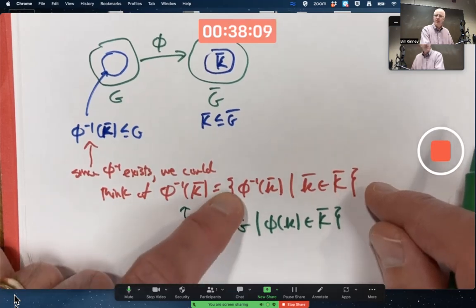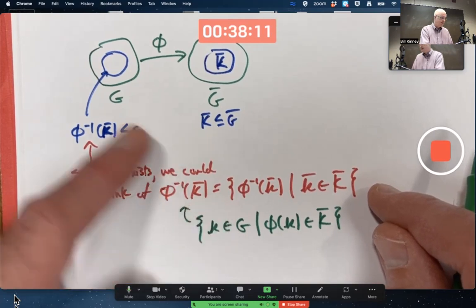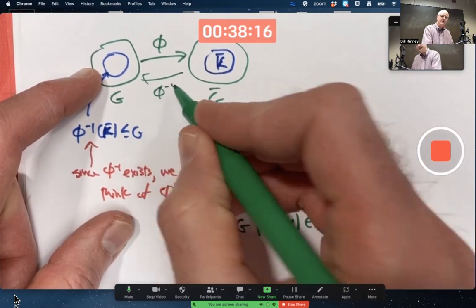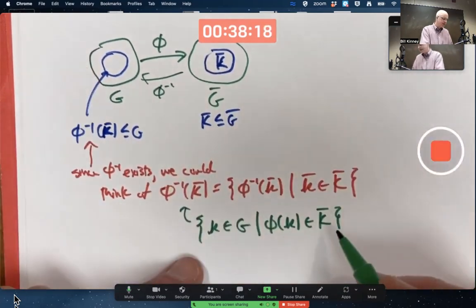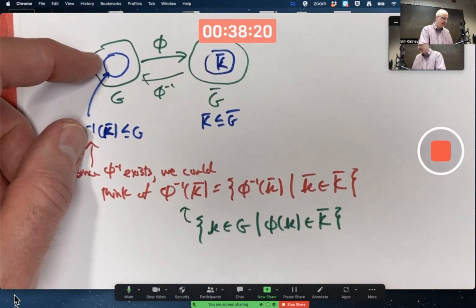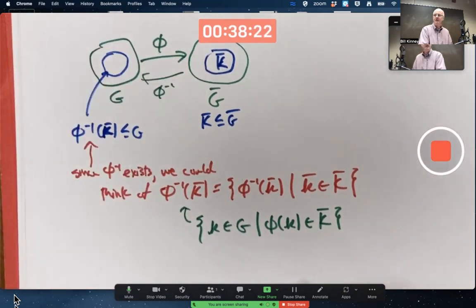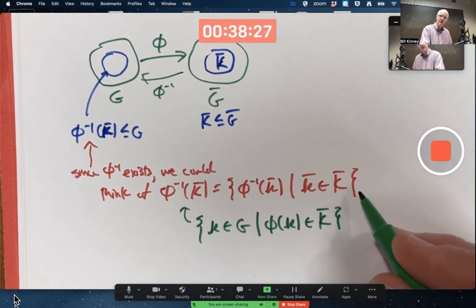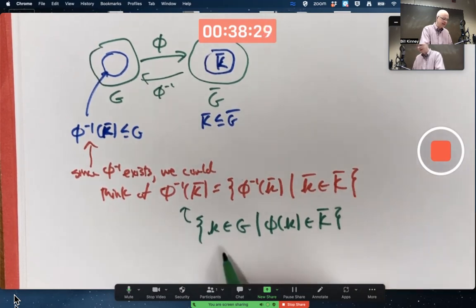The set of all outputs of φ inverse over here. You're imagining φ inverse going backwards, mapping like this. It is the same as the set of all things in G that get mapped into K-bar. Again, the set of all outputs of φ inverse as K-bar ranges over capital K-bar is the same as the set of everything in G that gets mapped into K-bar.